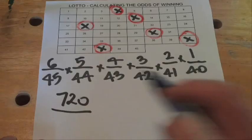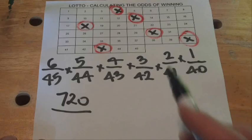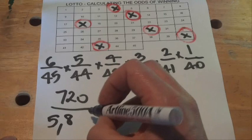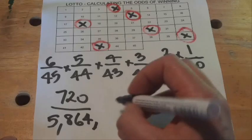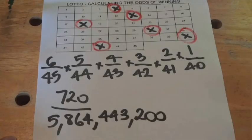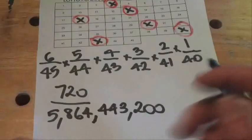Then we multiply the denominators: 45 by 44 by 43 by 42 by 41 by 40, and that gives us 5.8 billion.